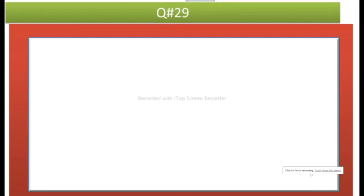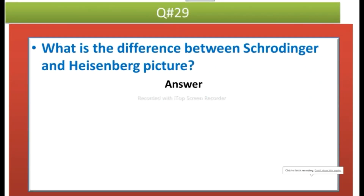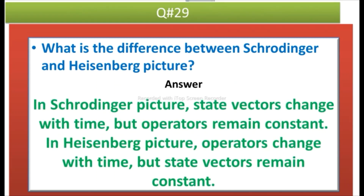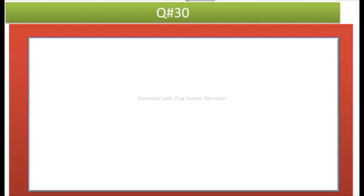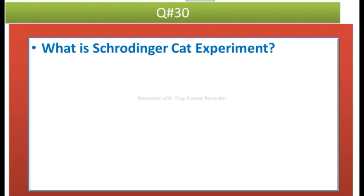Question 29: what is the difference between the Schrödinger and Heisenberg pictures? Answer: in the Schrödinger picture, state vectors change with time but operators remain constant. In the Heisenberg picture, operators change with time but state vectors remain constant.